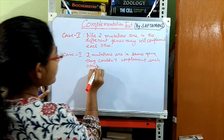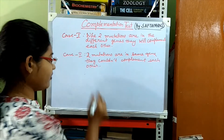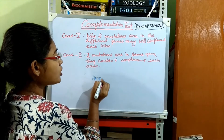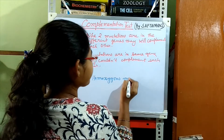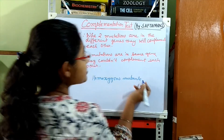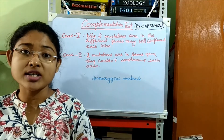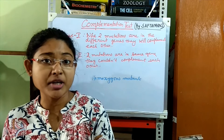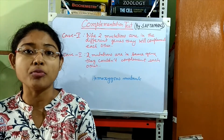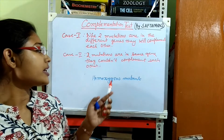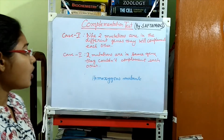Always remember that the complementation test is only applicable for homozygous mutants. As we saw in Case 1, the genotype of the parents were small a small a capital B capital B, and in the other parent capital A capital A small b small b — homozygous mutations are required for the complementation test.